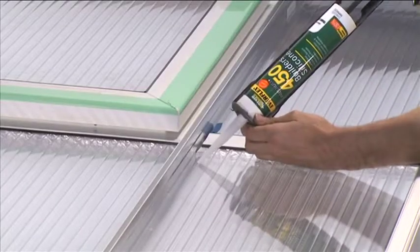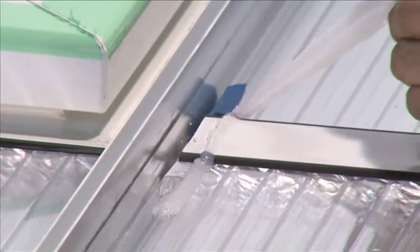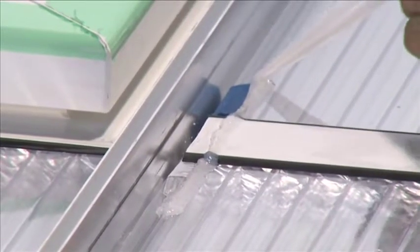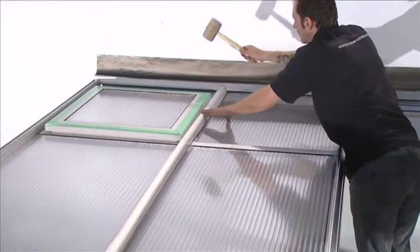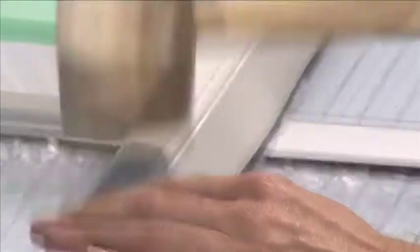Prior to installation of the bar top caps, run a bead of silicone across the tops of the muntin bar at either end, where the bar top cap gaskets will touch the roof glazing sheet. This will create a watertight seal.